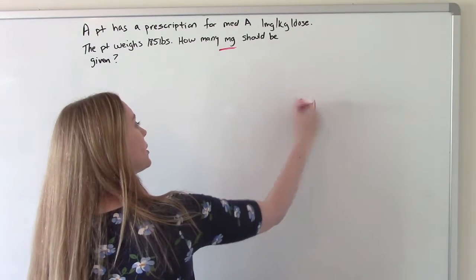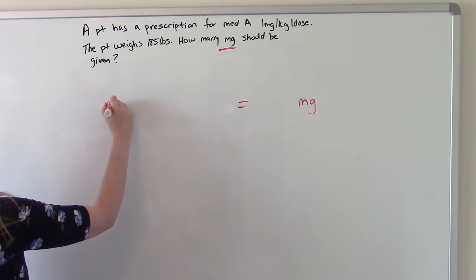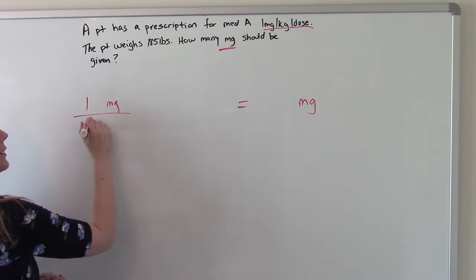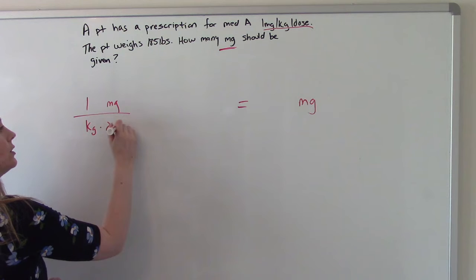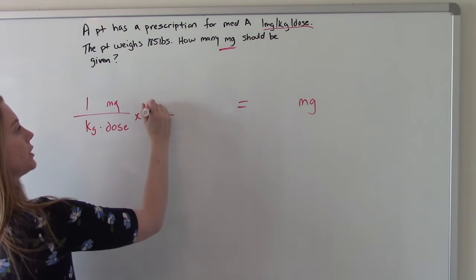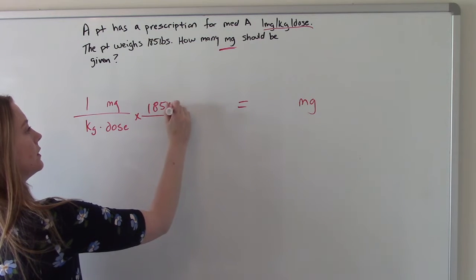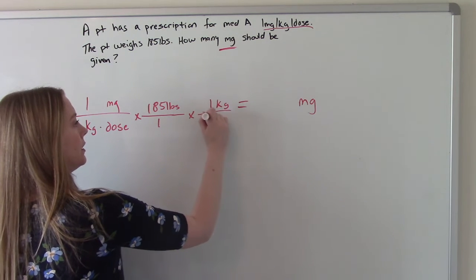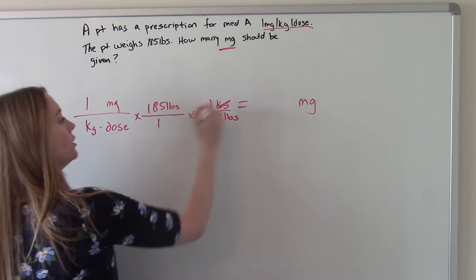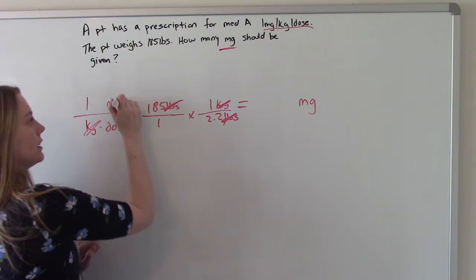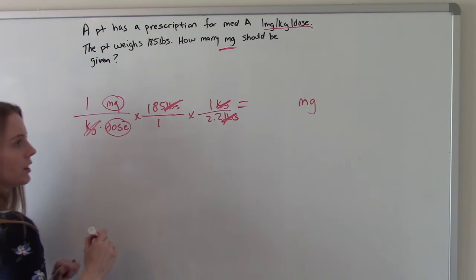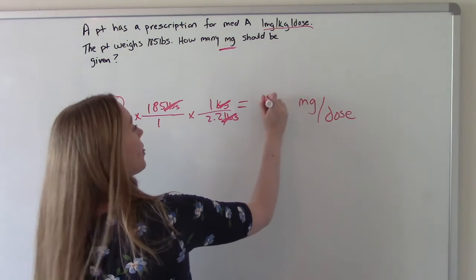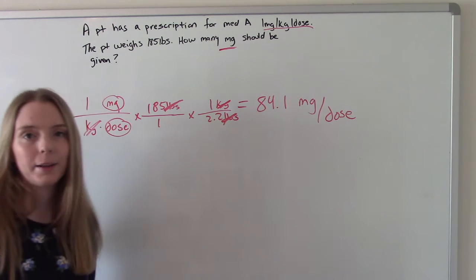So we're looking for milligrams. So we'll put milligrams in our answer. We want to have milligrams in our numerator. So where is that? That's up here. So 1 milligram per kilogram per dose. What else do we know? We know the patient weighs 185 pounds. And now we need to convert pounds to kilograms. So 1 kilogram is 2.2 pounds. So the kilograms will cancel, the pounds will cancel. This leaves us milligrams per dose. Punch it in your calculator, do the math, and you get 84.1 milligrams per dose.